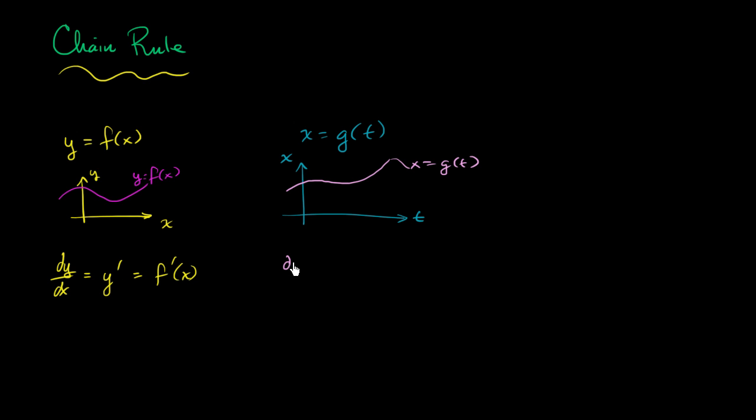And similarly, we can use differential calculus to come up with the rate of change dx dt, the rate at which x is changing with respect to t. We could write that as x prime in this context, or we could write this as g prime of t.